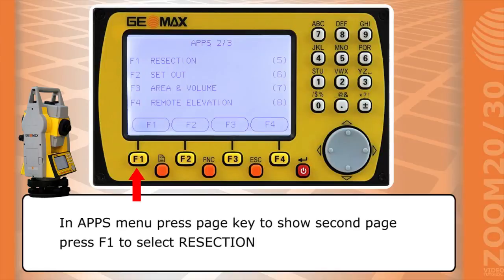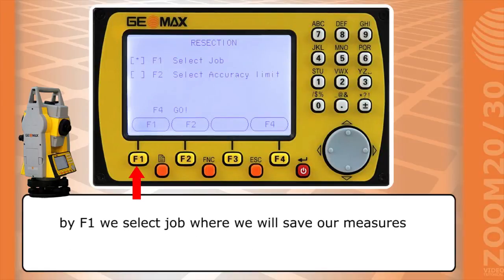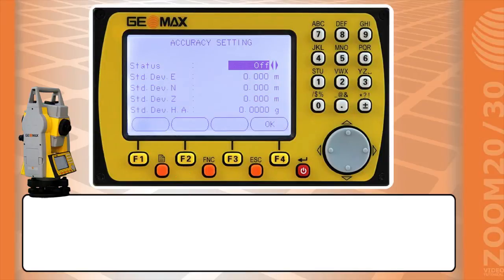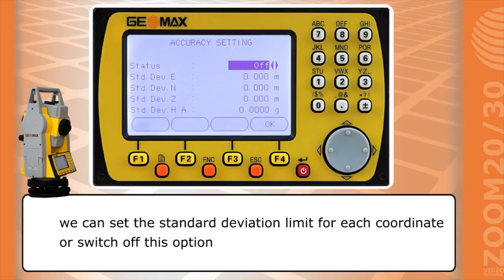Press F1 to select resection. By F1 we select job where we will save our measures. By F2 we can select accuracy limit. We can set the standard deviation limit for each coordinate. As with this option.